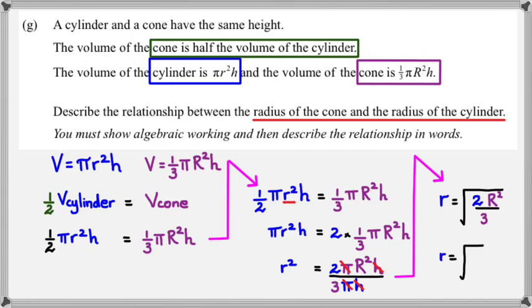So this would be r is equal to square root of 2 over 3 multiplied by capital R. Okay, so if you want to describe this relationship in words, then you can basically just say the radius of the cylinder is basically the radius of the cone multiplied by square root of 2 over 3.